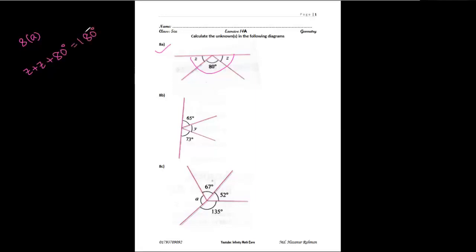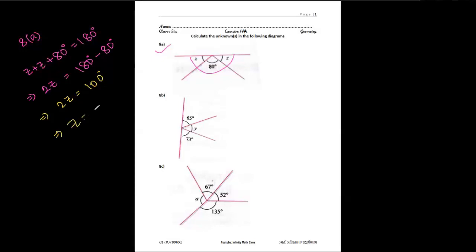180 degrees is called a straight angle. These adjacent angles together create a straight angle of 180 degrees. From this, we get 2z plus 80 degrees equals 180 degrees. Moving 80 to the other side: 2z equals 180 minus 80, which is 100 degrees. Therefore z equals 100 divided by 2, which is 50 degrees. That is the solution of 8a.